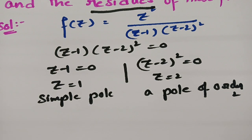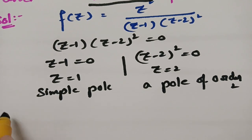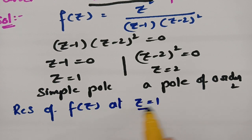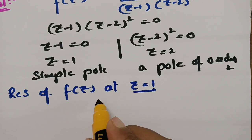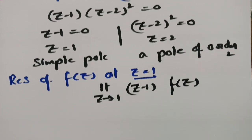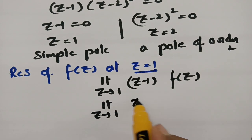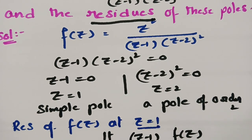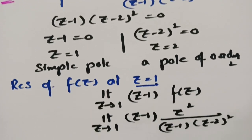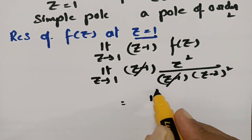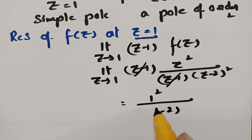To find the residue at z = 1 (a simple pole), we use: Res[f(z), z=1] = lim(z→1) (z-1)·f(z) = lim(z→1) (z-1) · z² / [(z-1)(z-2)²]. We cancel (z-1) and substitute z = 1, giving 1/(1-2)².